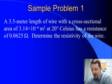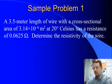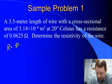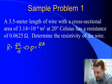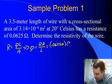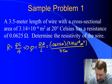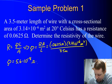Let's see if we can't put this into practice. A 3.5 meter length of wire with a cross-sectional area of 3.14 times 10 to the negative 6 square meters at 20 degrees Celsius has a resistance of 0.0625 ohms. Find the resistivity of the wire. Well, we'll start with our formula. Resistance equals resistivity times length over area. And we want to find resistivity. So that implies that resistivity equals resistance times area over length: 0.0625 ohms times 3.14 times 10 to the minus 6 meters squared over 3.5 meters, which gives me a total resistivity of 5.6 times 10 to the minus 8 ohm meters.